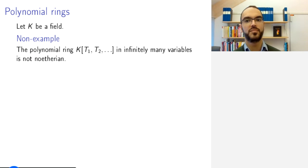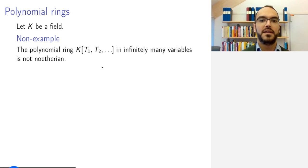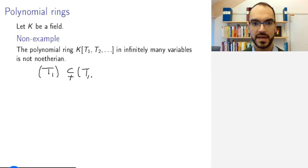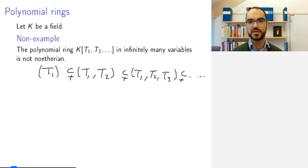What are known examples? Let K be a field. Then, if you consider the polynomial ring in infinitely many variables, it's not Noetherian, simply because the ideal generated by T1 is included properly in the ideal generated by T1, T2, and so on. Since you have an infinite supply of variables, this will create an ascending chain of ideals that doesn't terminate.